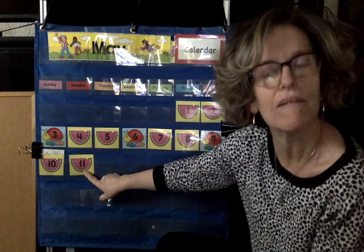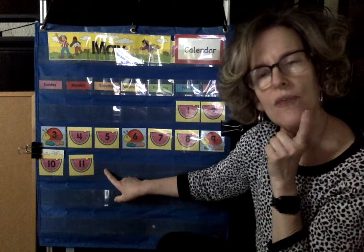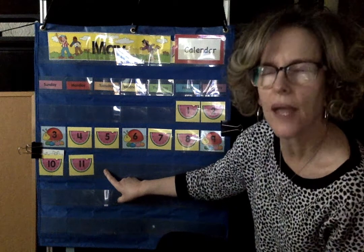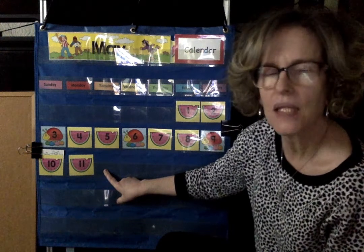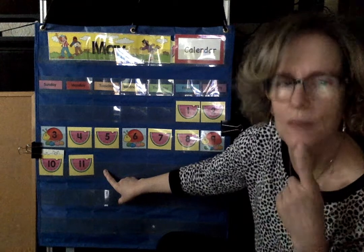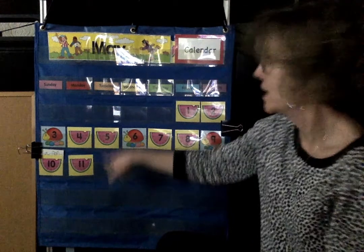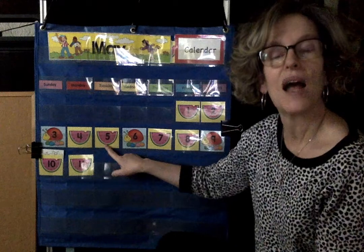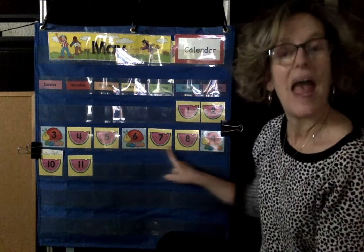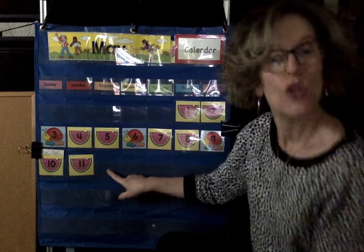Yesterday's number was May 11. When we're counting, what number do you think comes next after 11? You can close your eyes and you can count. One way to find out is for us to count all together. When we count, we always start with number one — one, two, three, four, five, six, seven, eight, nine, ten, eleven, twelve!